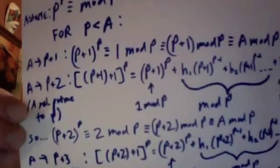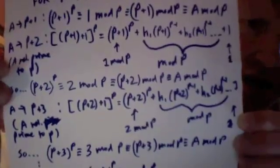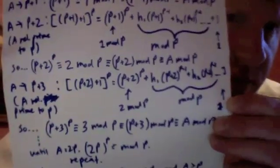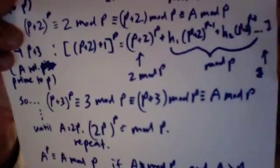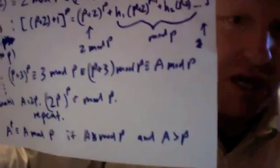So (p+1)^p ≡ 2 mod p, which equals (p+2) mod p, which equals a mod p since we let a = p+2. The same pattern continues for p+3: we have ((p+2)+1)^p = (p+2)^p, which is 2 mod p, plus mod-p terms, plus 1, giving 3 mod p — equivalent to (p+3) mod p, which is a mod p. This pattern repeats until a = 2p, at which point it repeats again. So we've proven a^p ≡ a (mod p) when a > p and a is relatively prime to p.